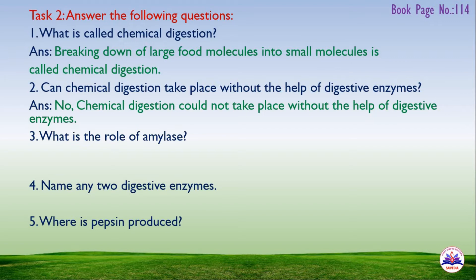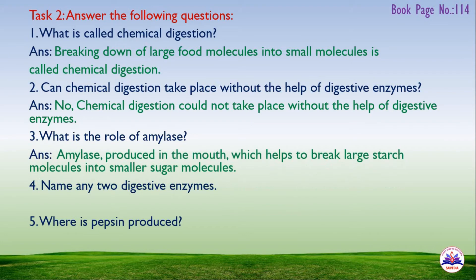Third question: what is the role of amylase? Answer: amylase is produced in the mouth and helps to break large starch molecules into small sugar molecules. Fourth question: name any two digestive enzymes. Answer: pepsin and trypsin.